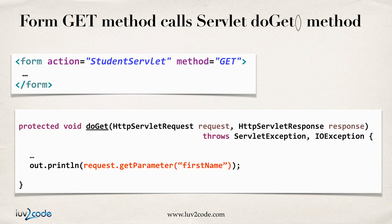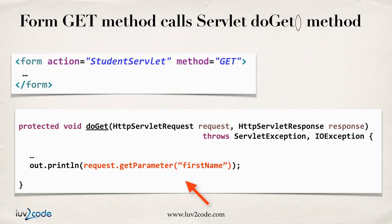Just as a recap of what we've seen so far, we've sent data over using the GET method, so we have our form action and we have method equals GET — that's the HTML form. Then in our Java servlet code we have to override the appropriate method, so in this case we need to override the doGet method, because they're passing in a GET request. Here in red we have request.getParameter, that's for reading the form data, so we've seen this before, just kind of a recap.